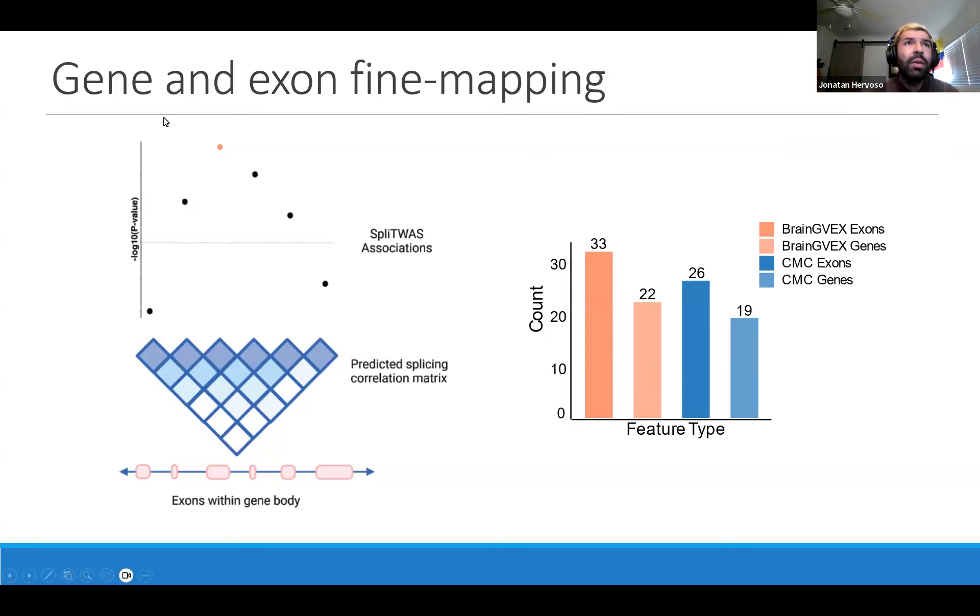The basis of the method is we can use our splicing associations and create a predictive splicing correlation matrix through the overlapping SNPs and associations and loci that we were using for our predictive models and apply this probabilistic fine mapping method to tell us what exons within a same gene would be the ones driving the signal. From this, we can also look at the genes that could potentially be driving the associational signal we're seeing. We found there's a much smaller subset of these putative exons and genes in both datasets.